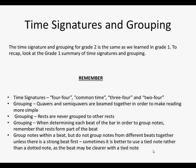When it comes to grouping: quavers and semi-quavers are beamed together to make reading more simple. Rests are never grouped to other rests. When determining each beat of the bar, remember that rests form part of the beat too. Group notes within a beat, but do not group notes from different beats together unless there is a strong beat first. Sometimes it is better to use a tied note rather than a dotted note, as the beat may be clearer with a tied note.